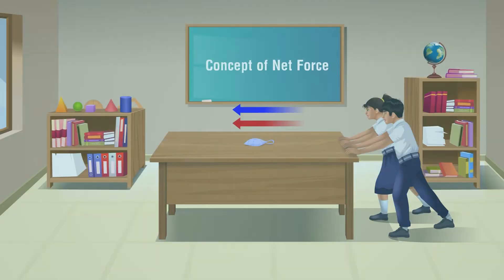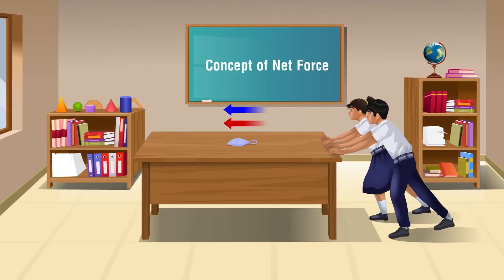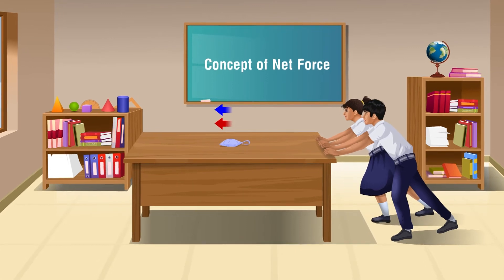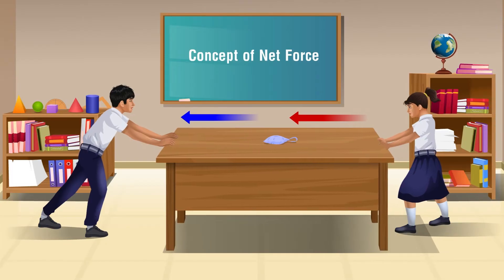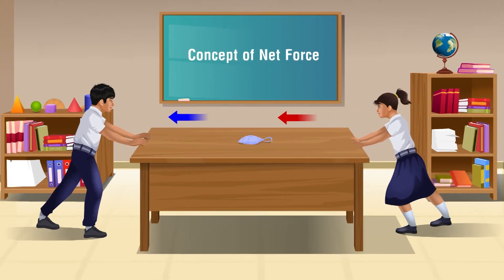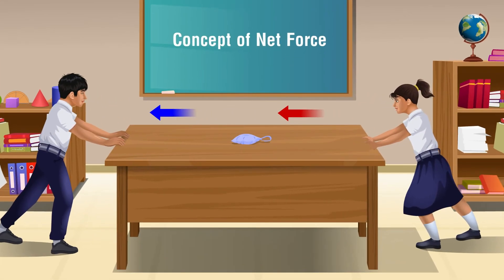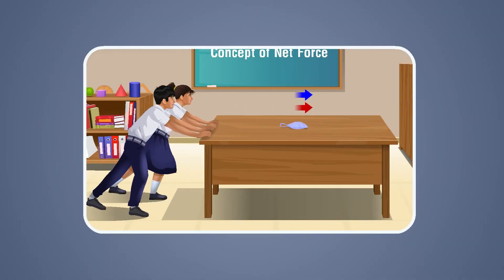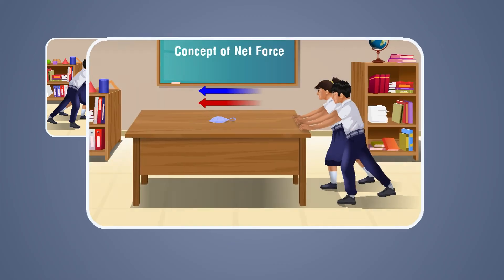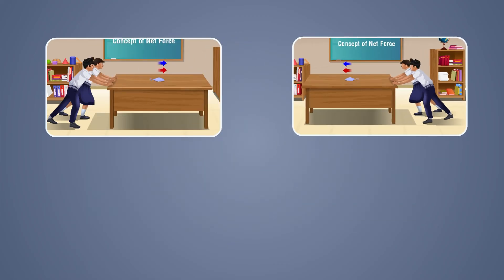Case 4: Now both of you push the object to the left. Has it become easier to move the object? Case 5: Now one of you pull it and the other push it in the same direction. Observe that the object can be easily moved when both of you apply force in the same direction, either by pulling or pushing.